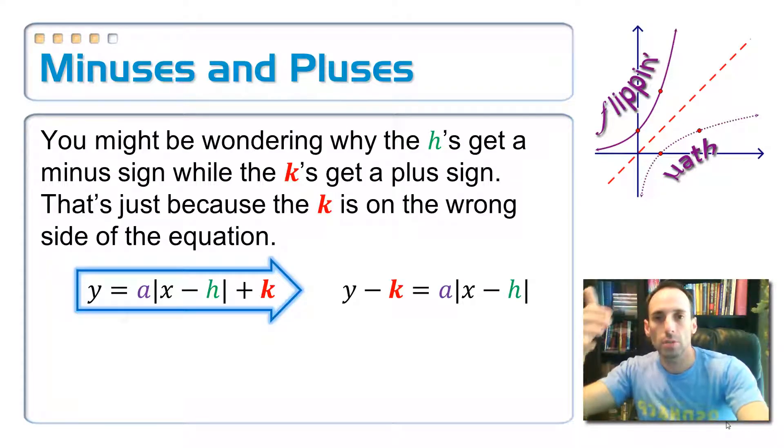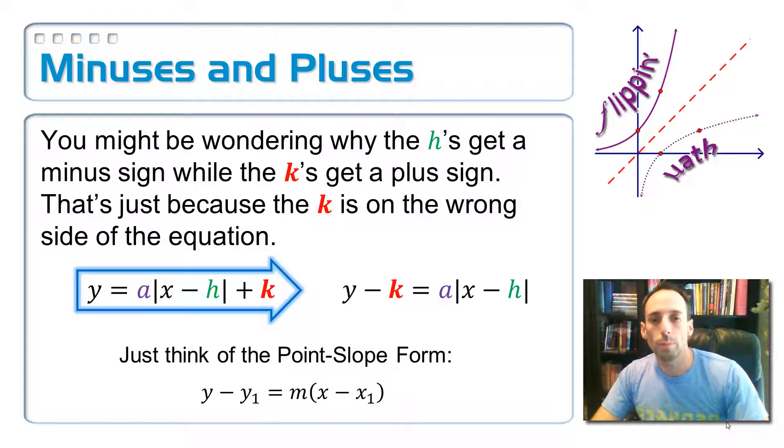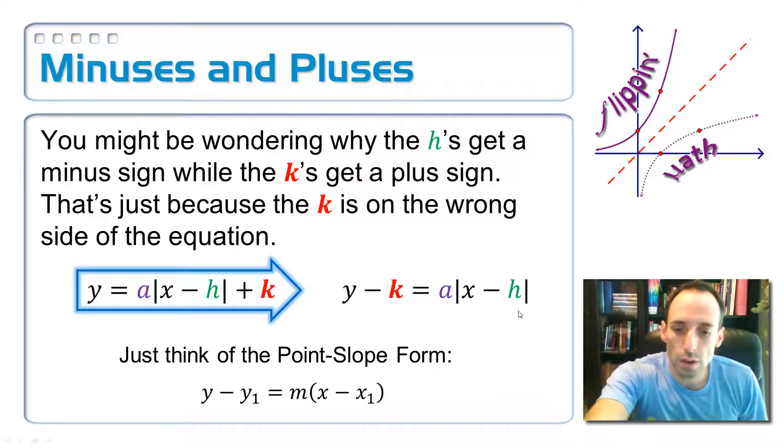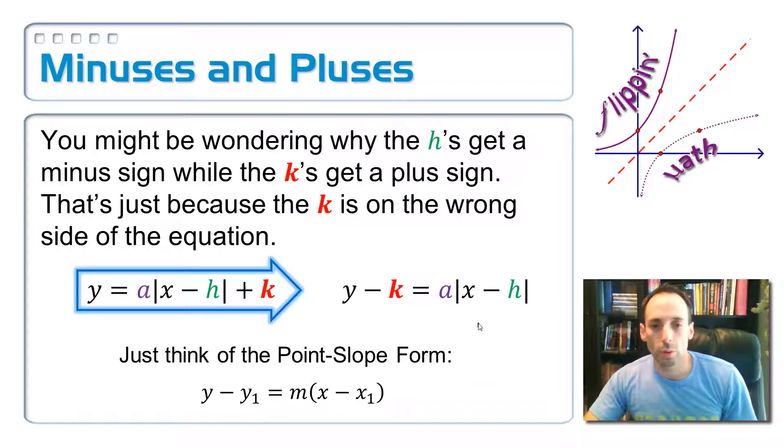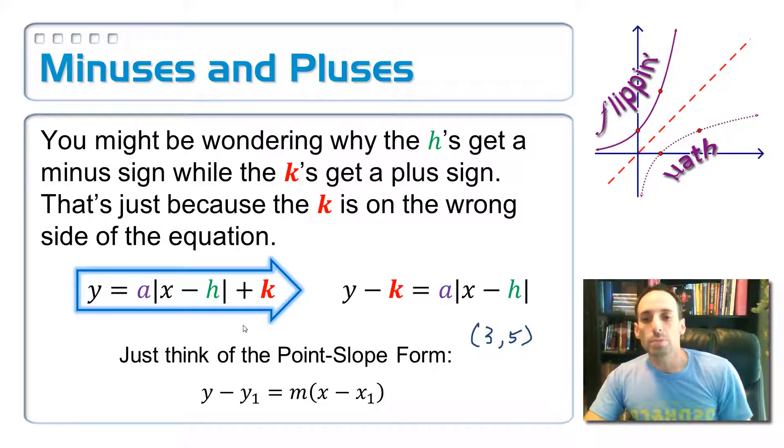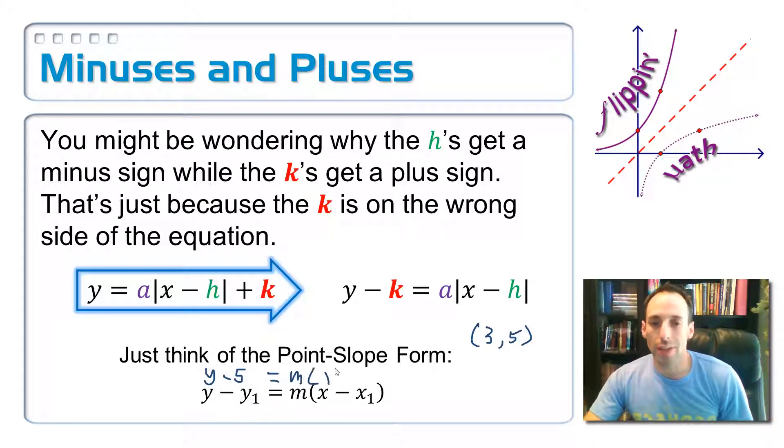Let me look at this in terms of the point-slope form. When I look at the point-slope form, that's the same kind of thing. If I have the point 3, 5, in this point-slope form, I would put y minus 5 equals the slope times x minus 3, right?